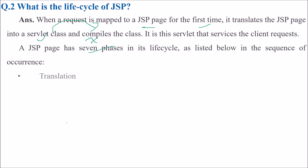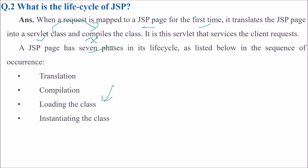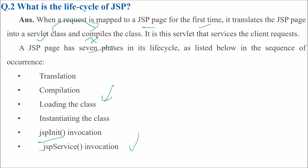The seven phases of the JSP lifecycle are: first, translation; then compilation; loading of the class; followed by instantiation of the class; then JSP init initialization — invocation of JSP init; then JSP service invocation; and finally JSP destroy invocation.